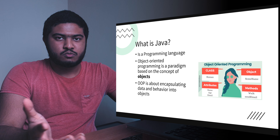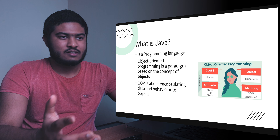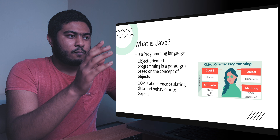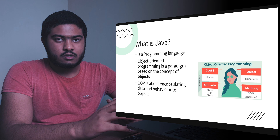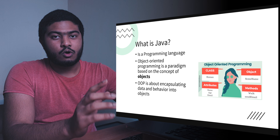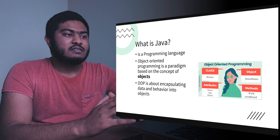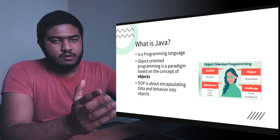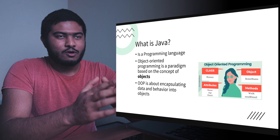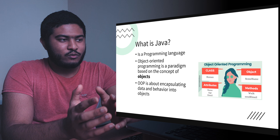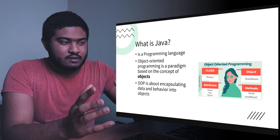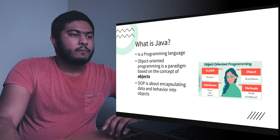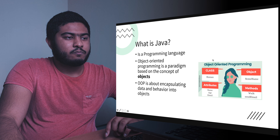Like any other language — Python, Ruby, C#, C++ — those are programming languages and Java is as well. More specifically, Java is an object-oriented programming language, or OOP. This is a paradigm based on the concept of objects. OOP is about encapsulating data and behavior into objects.